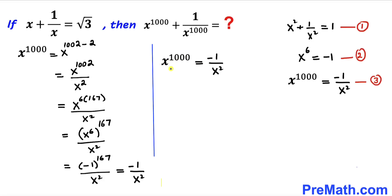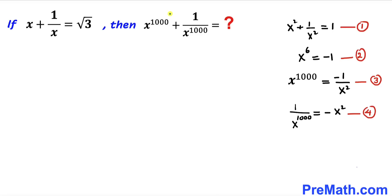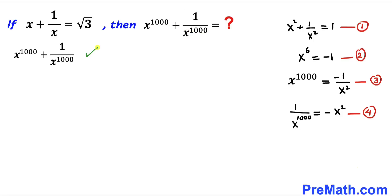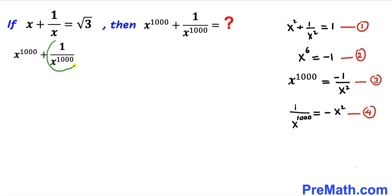Now let's find 1/x^1000. Writing x^1000 as a fraction and flipping both sides of equation 3, we get 1/x^1000 = -x². From equation 3, x^1000 = -1/x², and from equation 4, 1/x^1000 = -x².